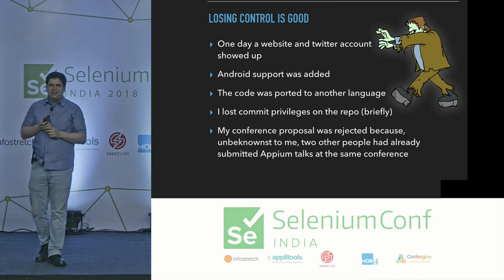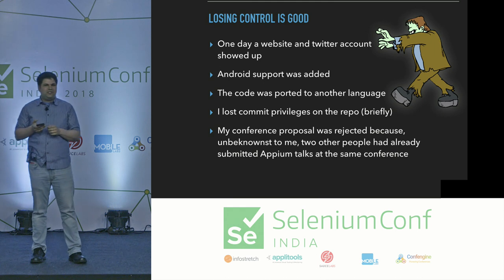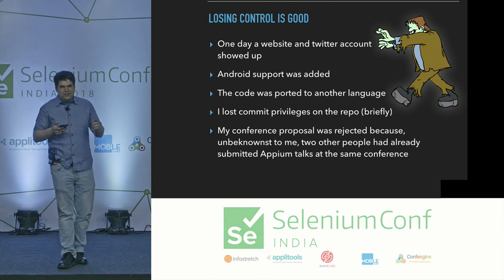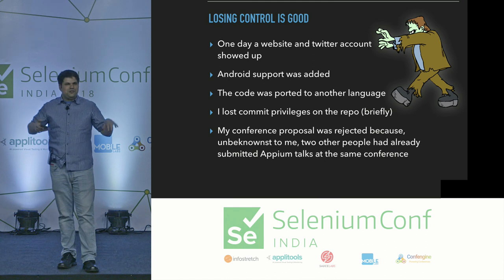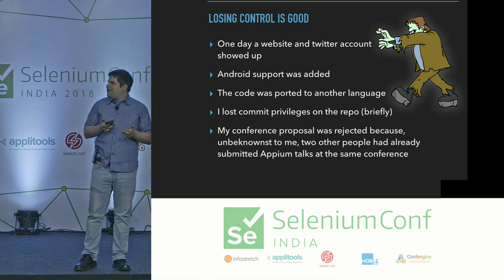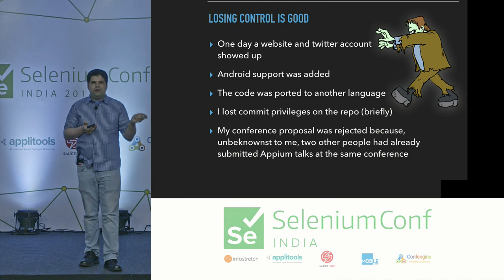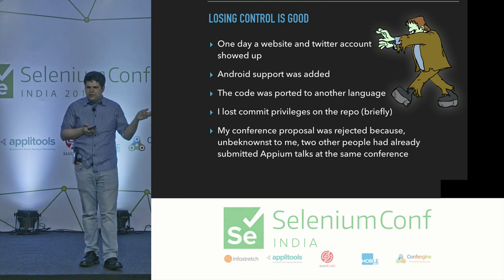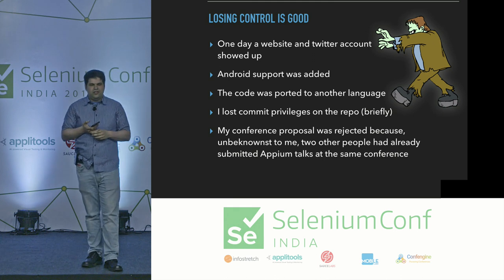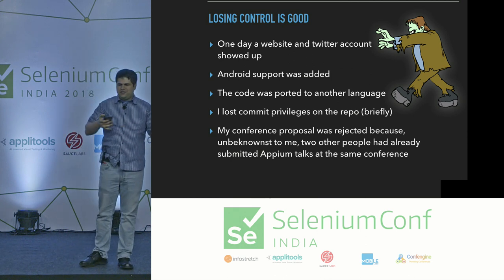The interesting thing about open source is it's not like working at a company. When you work at a company and do well, they give you more responsibility. Open source is the total opposite — the better you do, the more people get involved and the less control you have. At first that may be alarming, but you realize it's a good thing. With Appium, one day a website and Twitter account showed up — I have no idea who did it. One day someone made a pull request to add Android support. One day the project ported to JavaScript, and I was simply outvoted six to two.